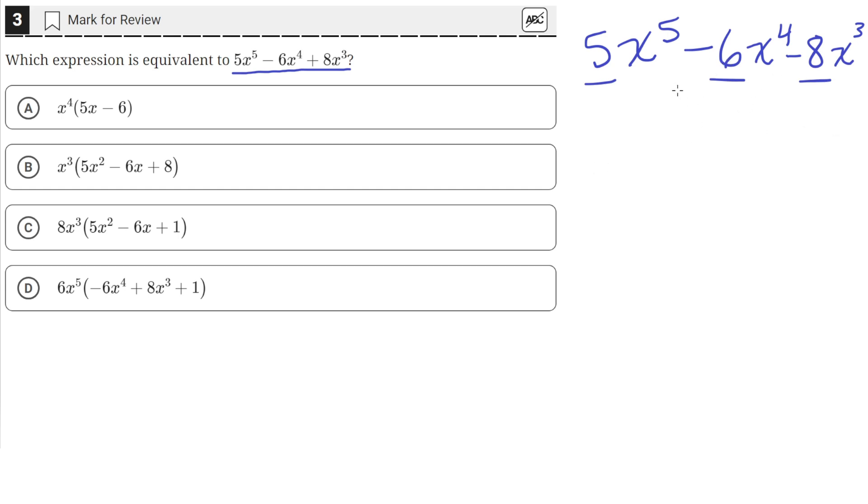So like 6 has factors of 3 and 2, but 5 does not have any factors equal to 3 or 2. So all of these do not have a factor that is shared among them.